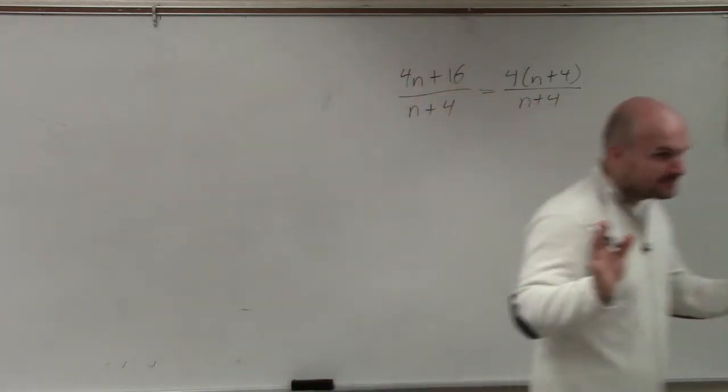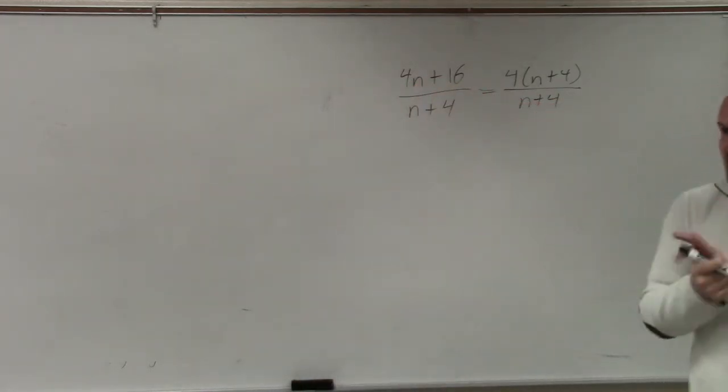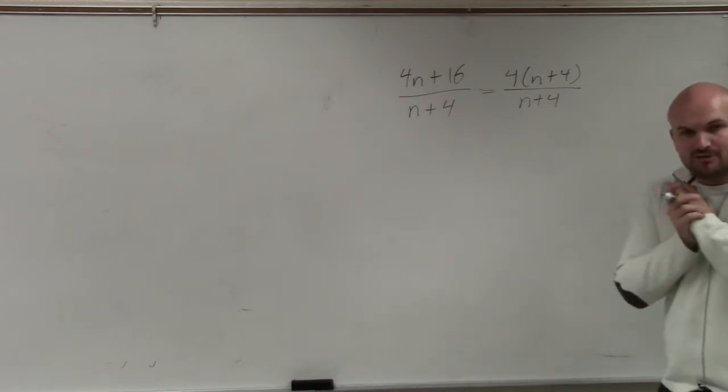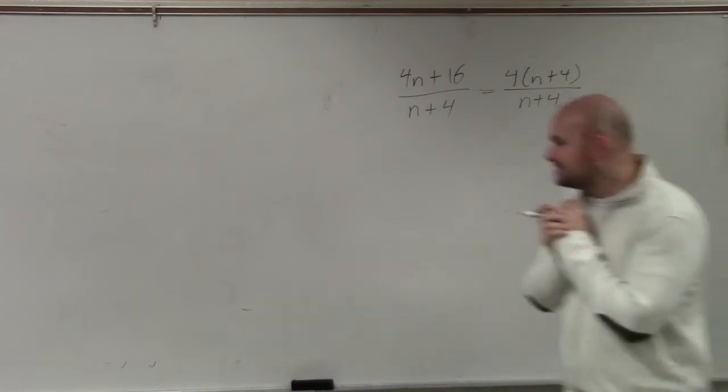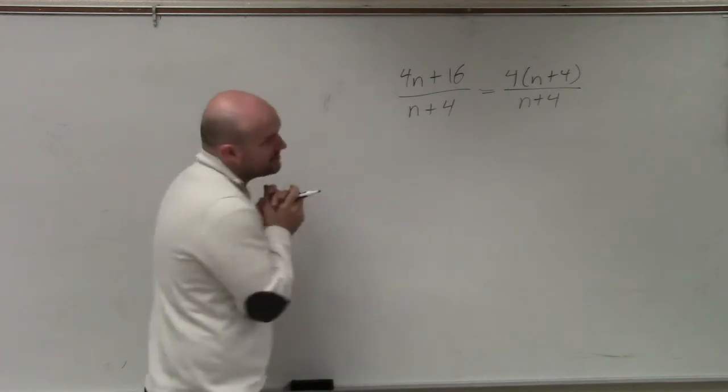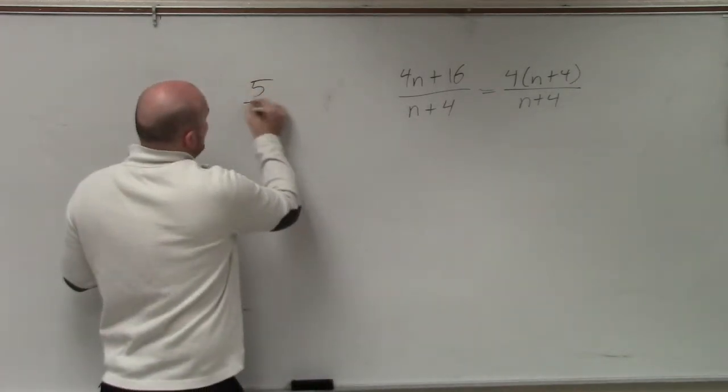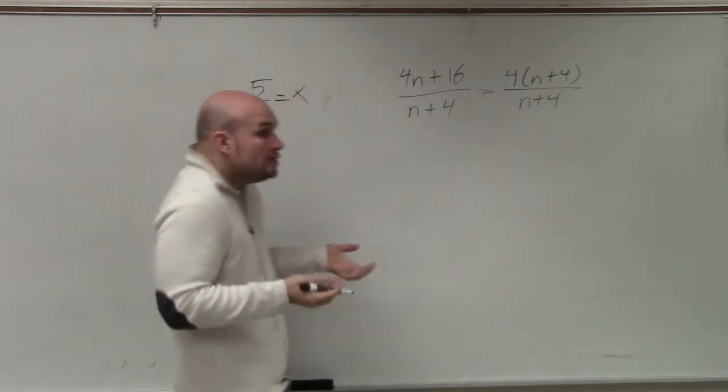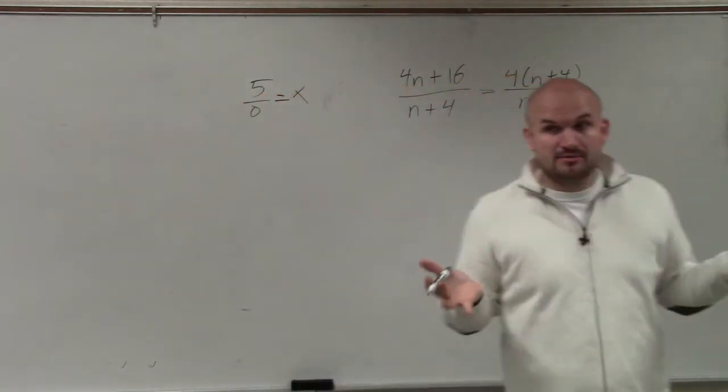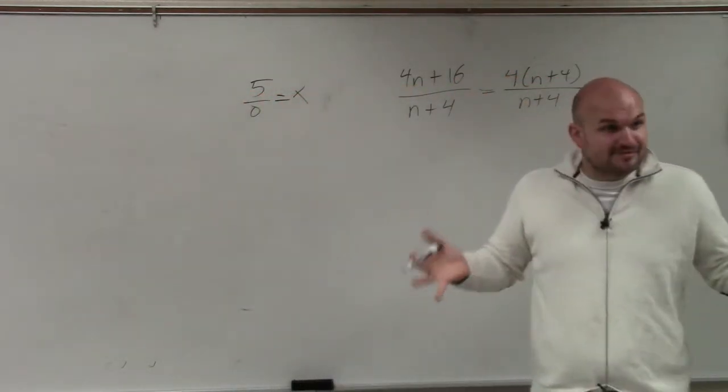Now, the next thing we need to talk about is restrictions. Here's something I really want to make sure you understand. Remember how we talked about this example: 5 divided by 0 equals x? We know that 0 cannot be in the denominator.